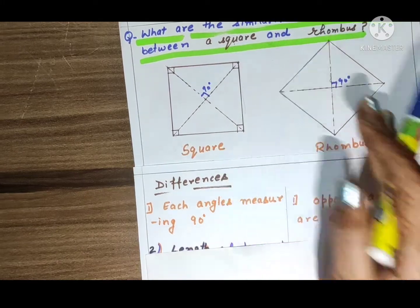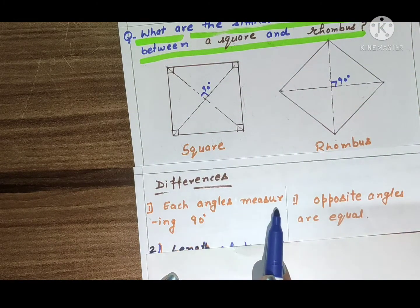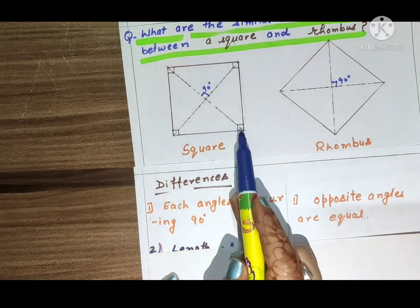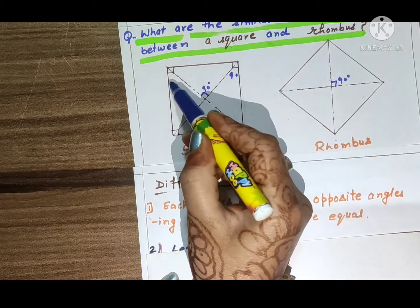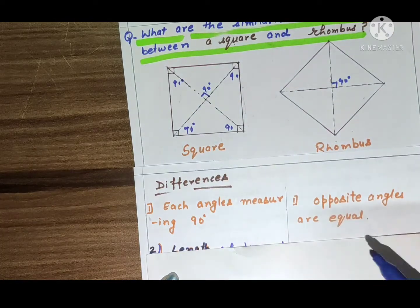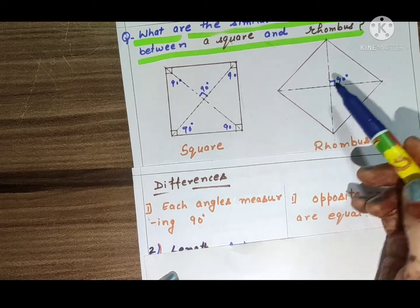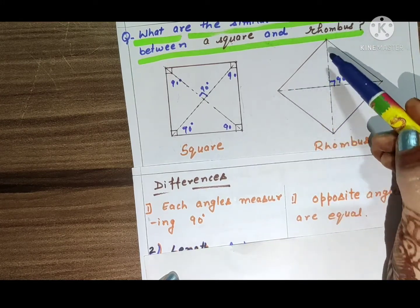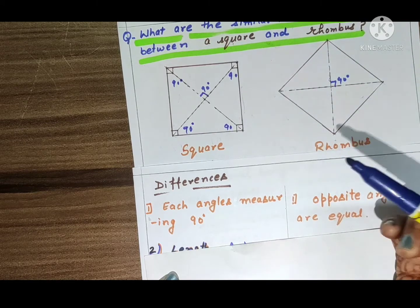First difference: each angle measuring 90 degrees. In square, each angle is 90 degrees. In rhombus, opposite angles are equal.